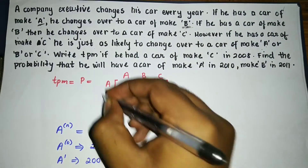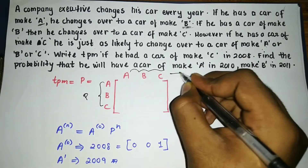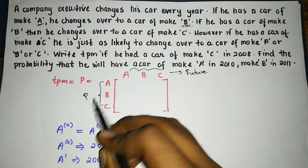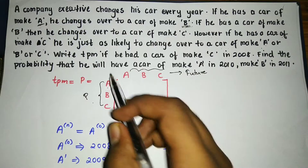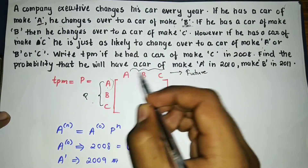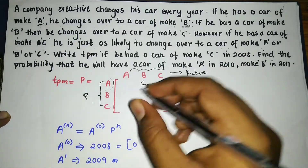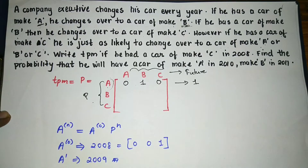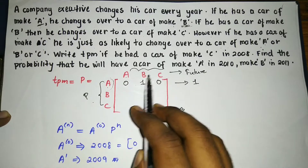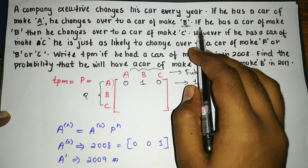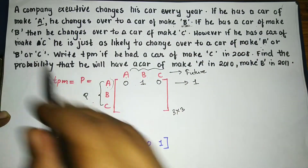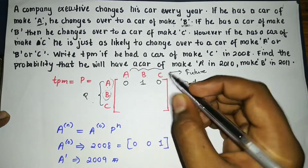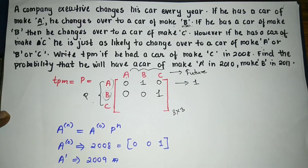So the present state determines the future state in a Markov process. If he has a car of brand A (present state), he changes over to brand B in the future — so the probability is 1, and the rest are zero. This gives us a 3×3 matrix with brands A, B, and C. For brand B (present state), he changes over to brand C, so that probability is 1 and the rest are zero.